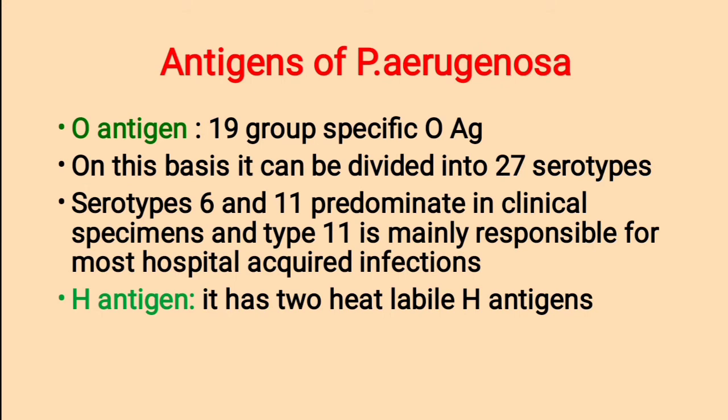Antigens of Pseudomonas aeruginosa. There are mainly two types: O-antigen and H-antigen. For O-antigen, there are 19 group-specific O-antigens, on the basis of which it can be divided into 27 serotypes. Serotypes 6 and 11 predominate in clinical specimens, and type 11 is mainly responsible for most hospital-acquired infections. For H-antigen, it has two heat-labile H-antigens.